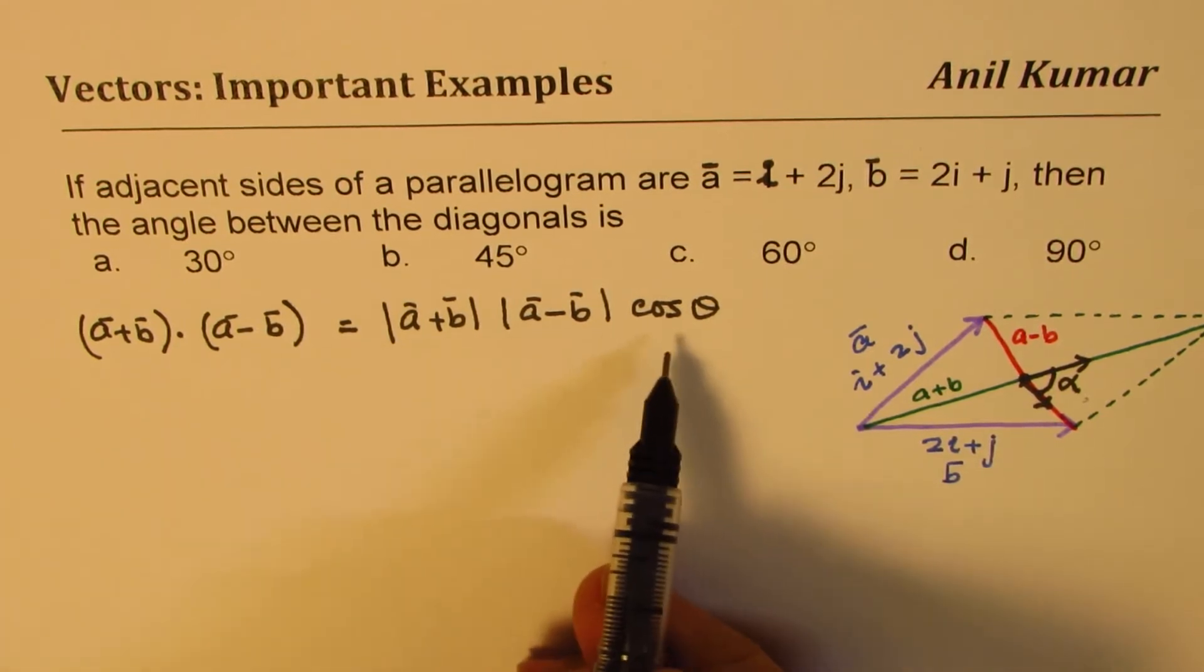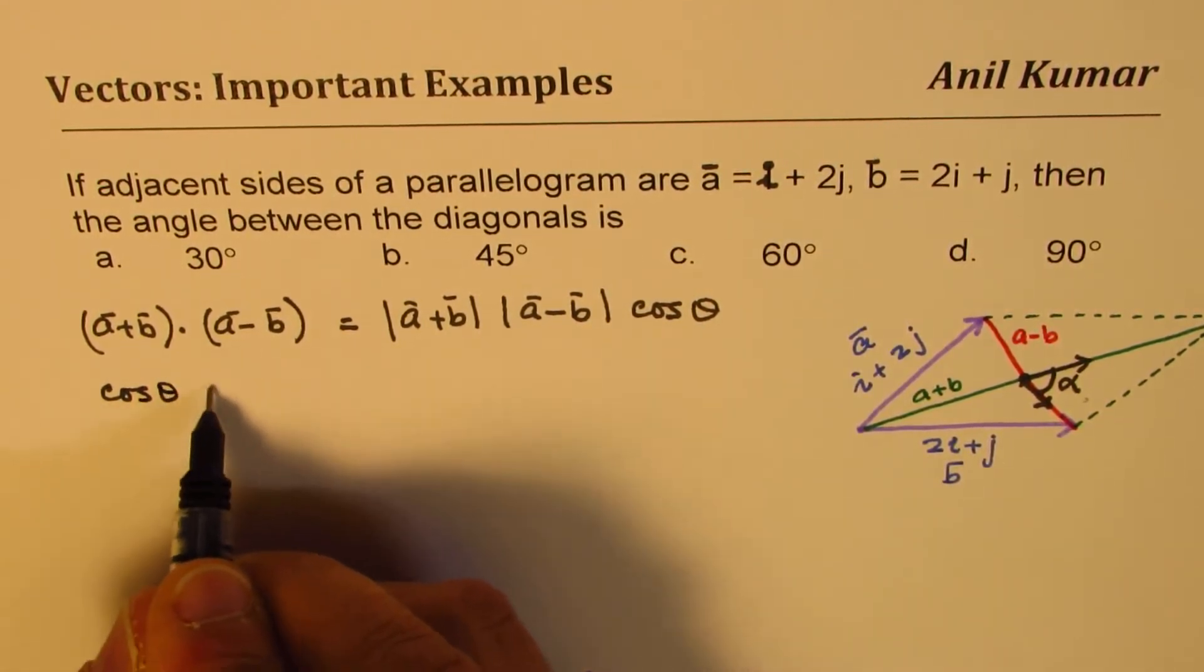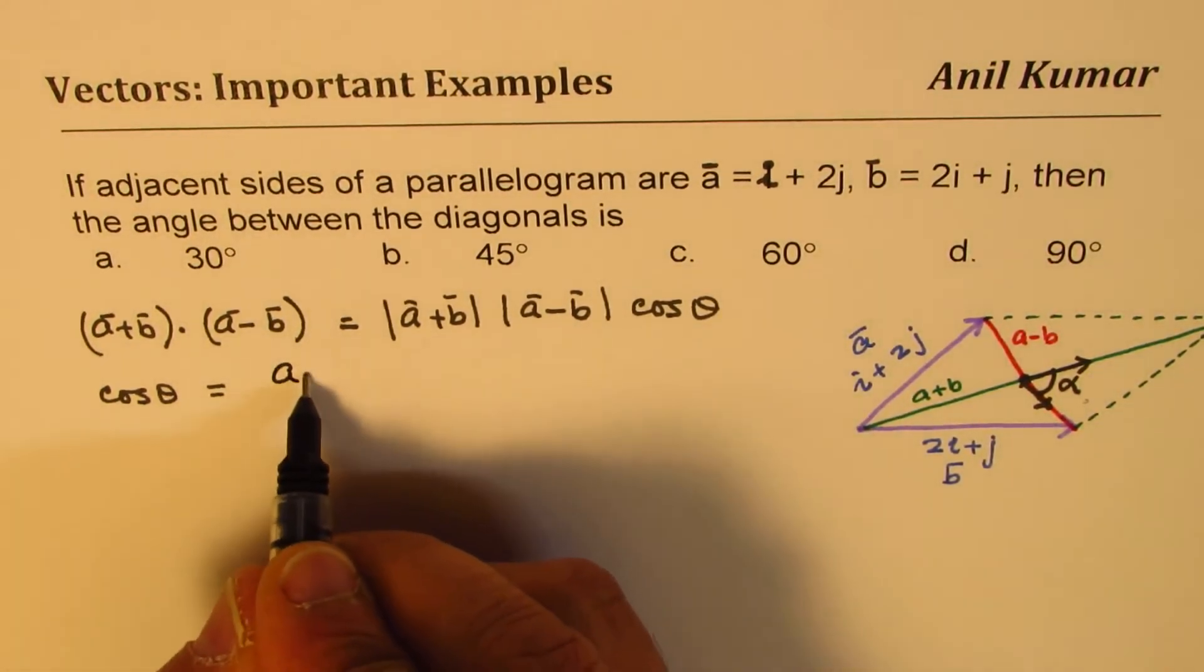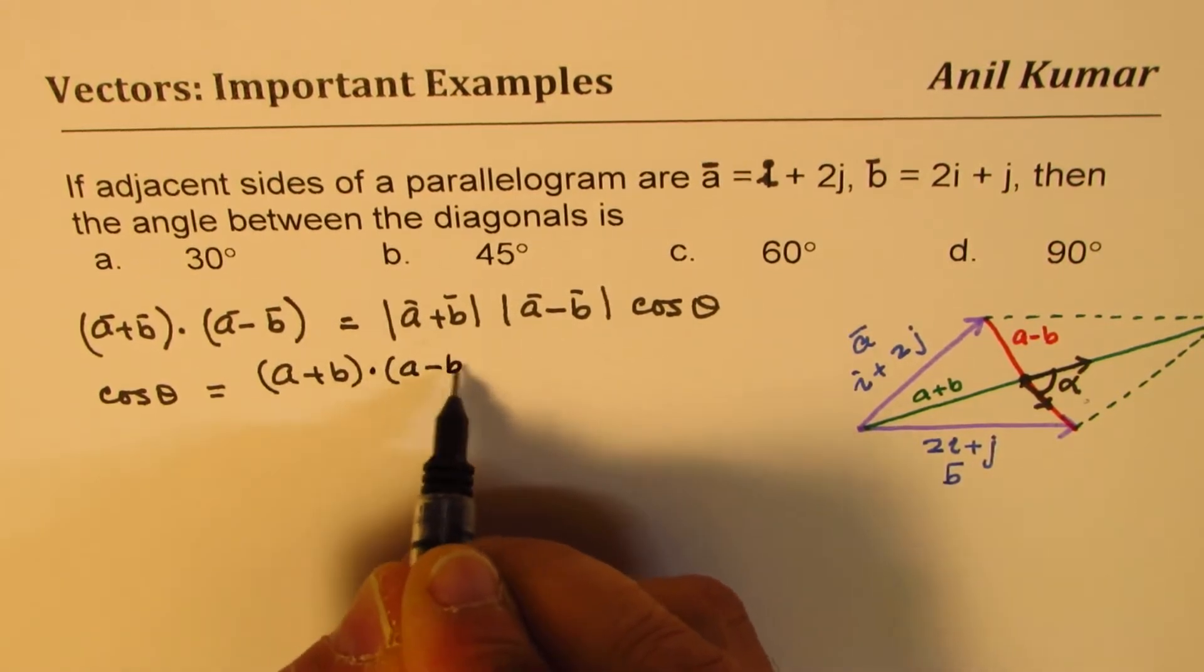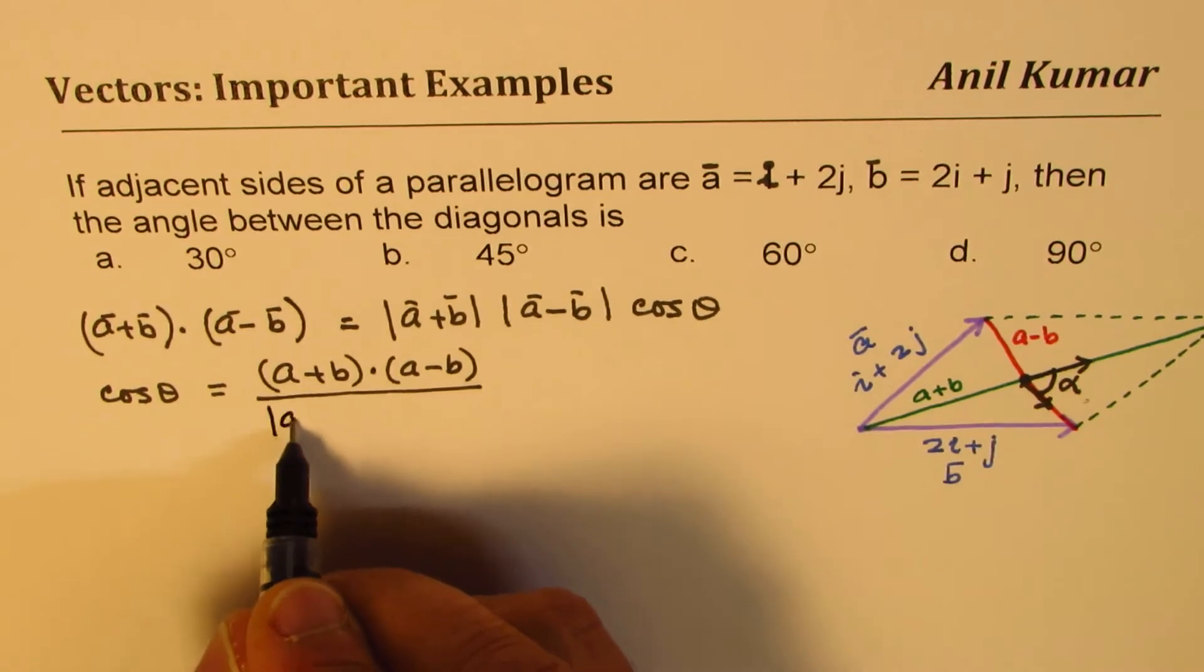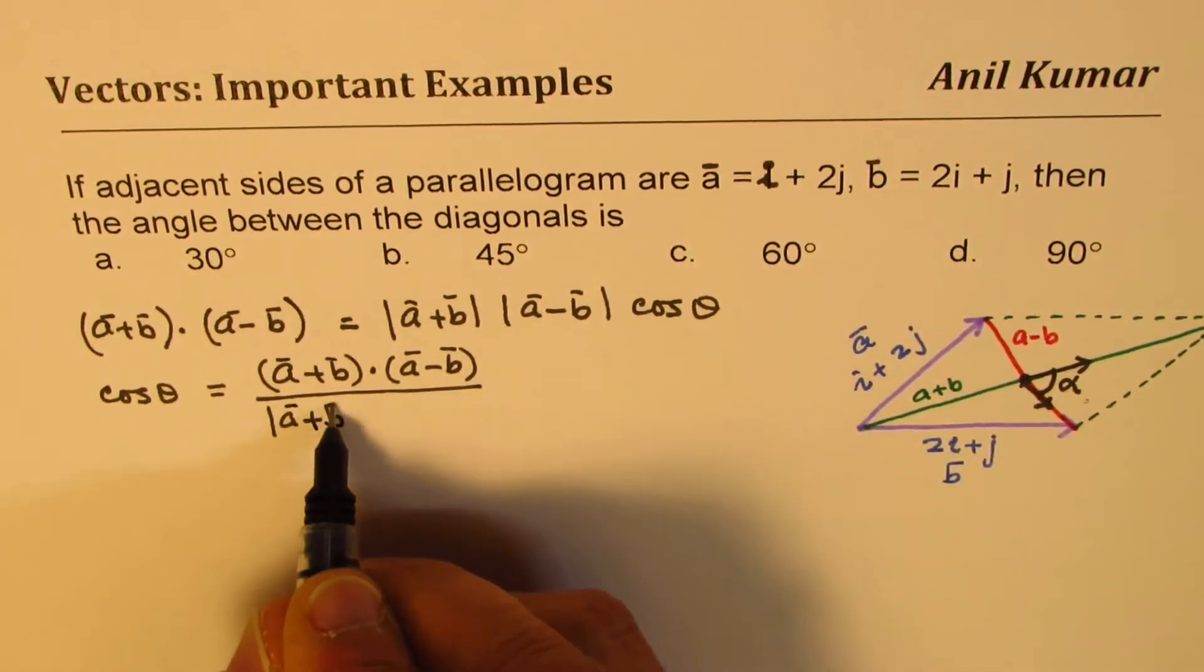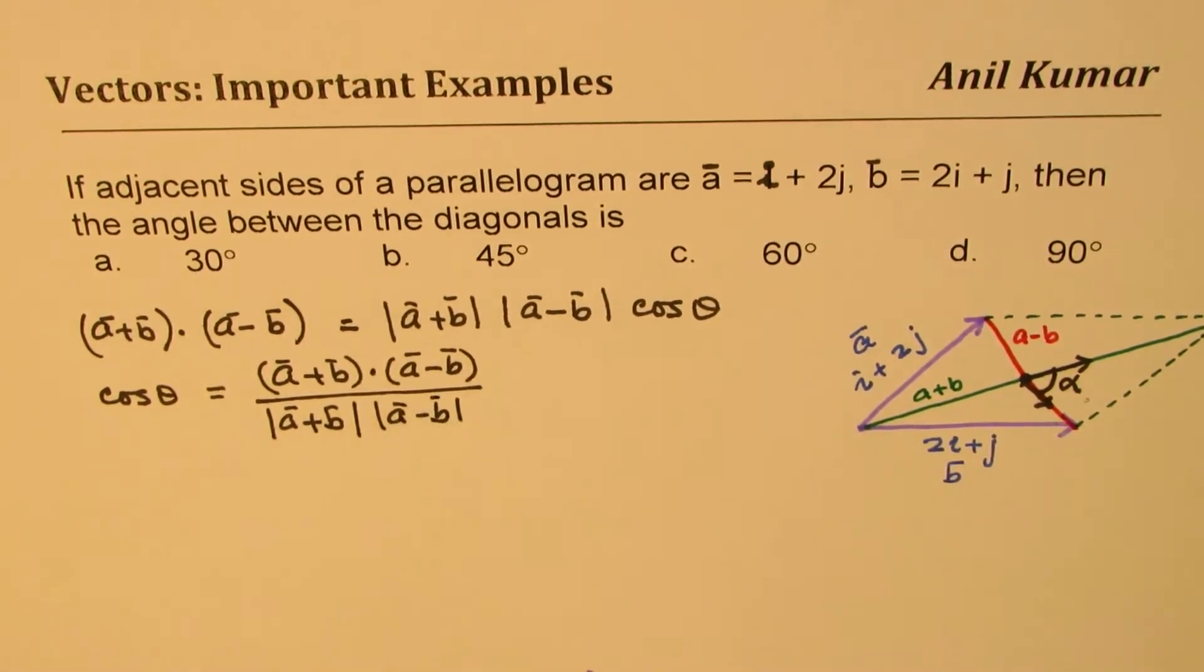Now what is a + b? So let's find out what is a + b and what is a - b. So let's do our calculations here first.